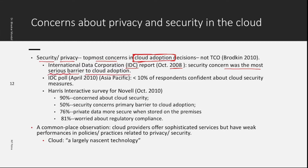People who are not adopting cloud are mainly thinking about security concerns. After 2010, less than 10% of respondents were confident about cloud security measures. The Harris Interactive Survey for November October 2010 found: 90% concerned about cloud security; 50% said security concern was the primary barrier to cloud adoption; 76% felt private data is more secure when stored on-premises; and 81% were worried about regulatory compliance.